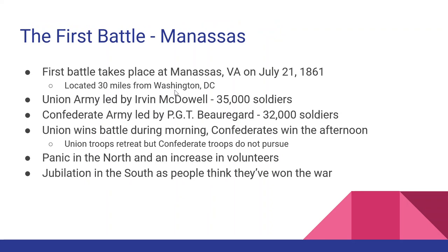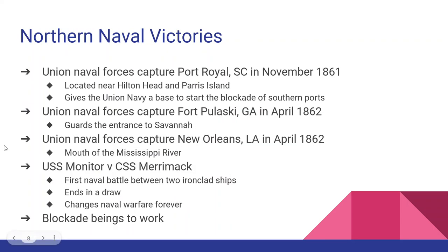The first battle is July 21st, 1861 — the Battle of Manassas, about 30 miles from Washington D.C. It is a Confederate victory and causes panic in the North because they were not expecting to lose. Almost as soon as the war starts it becomes a naval battle. The Union, wanting to blockade Southern ports, takes over Port Royal in South Carolina, Fort Pulaski in Savannah, and even New Orleans in April 1862. Slowly but surely, all the different port cities and ways to move goods in or out of the Confederacy are clamped down by the Union.